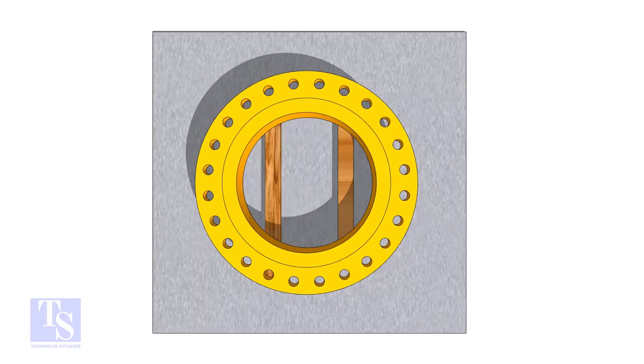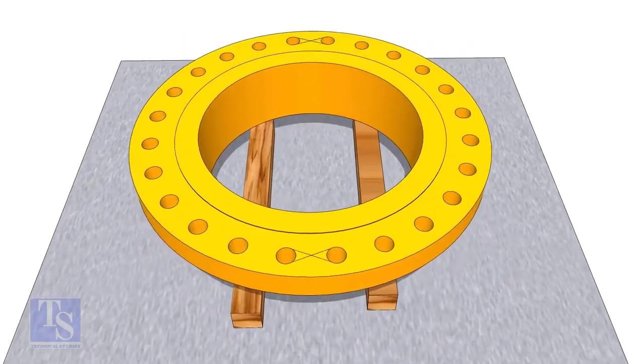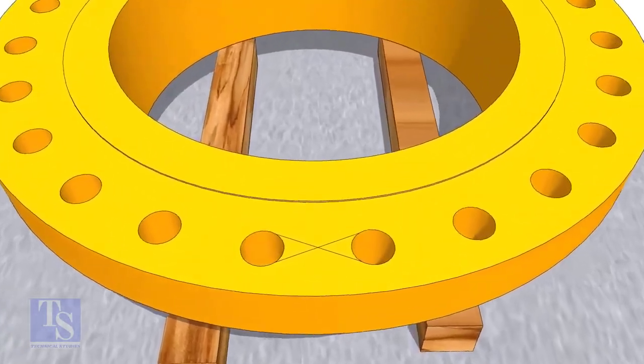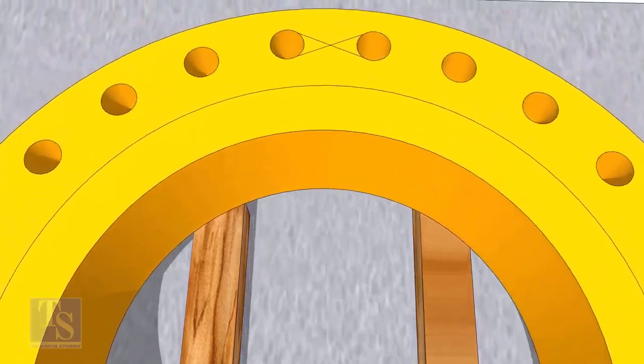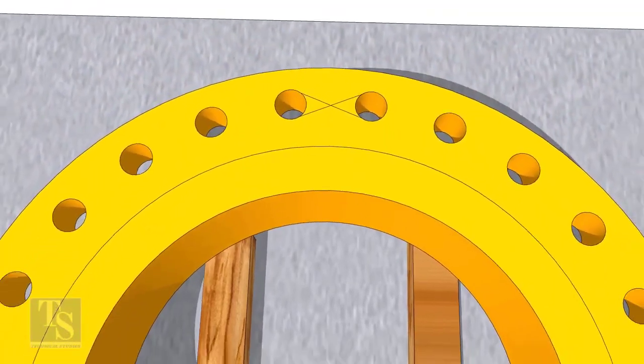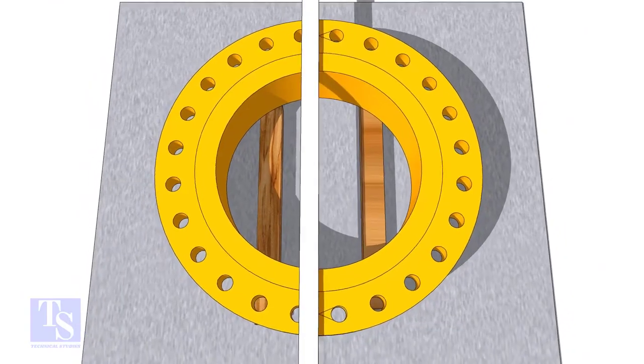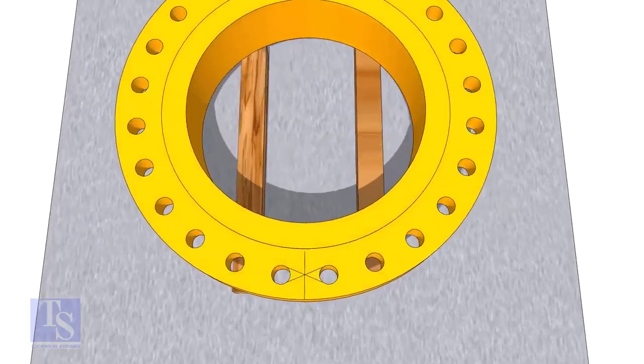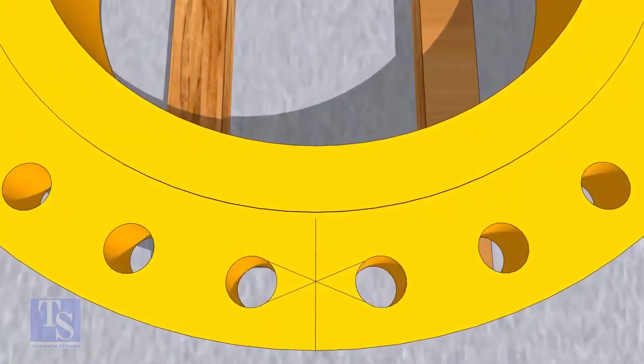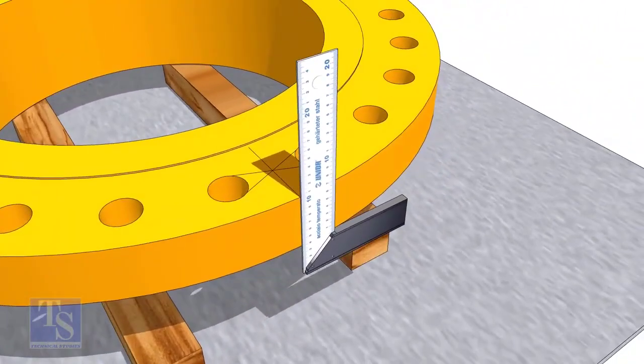In the second method, you need to mark the center line of the flange. Draw tangential lines on two adjacent holes on opposite sides. Draw a line as shown. Transfer the center line to the side of the flange.